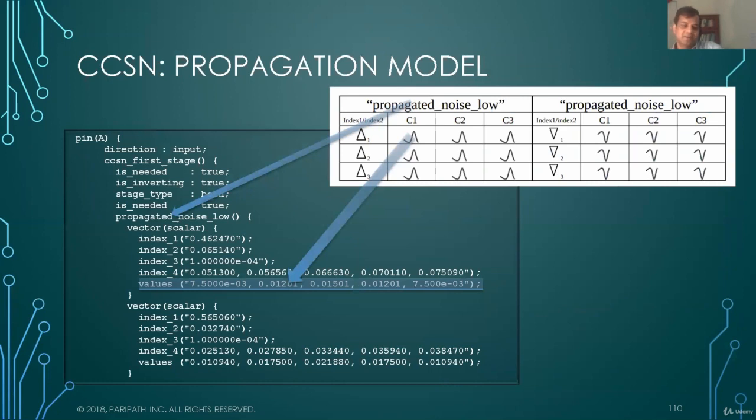And the way it shows up in Liberty is as follows. It's again a table of triangle which is characterized by width and height. So this is your index one and index two. Index three is your capacitance. And index four is your time. Index five is your voltage waveform or value of the voltage. So that's your propagated noise model.